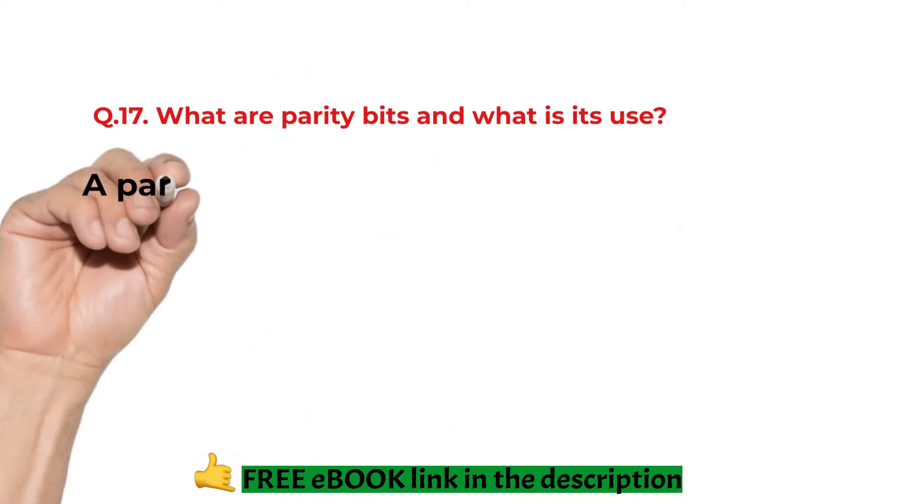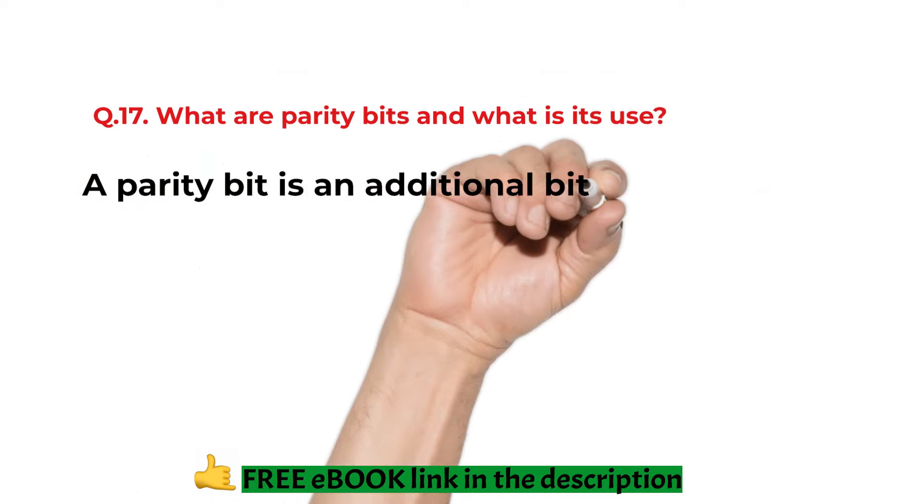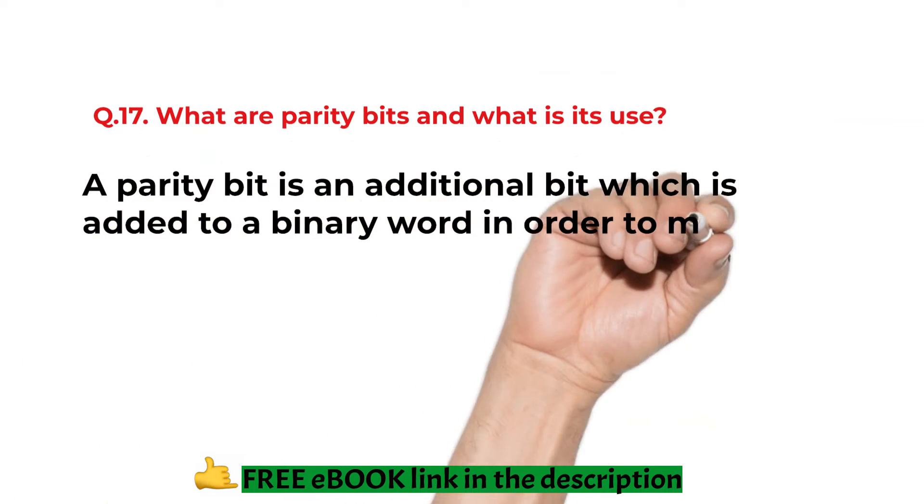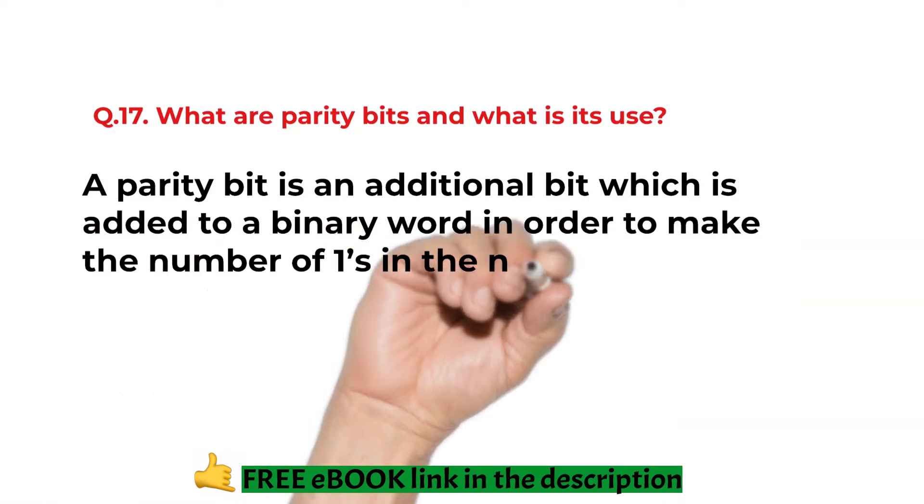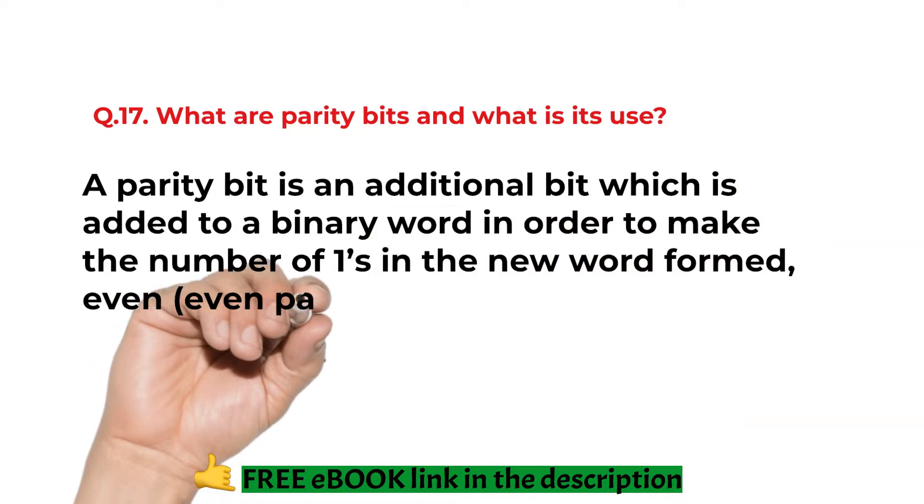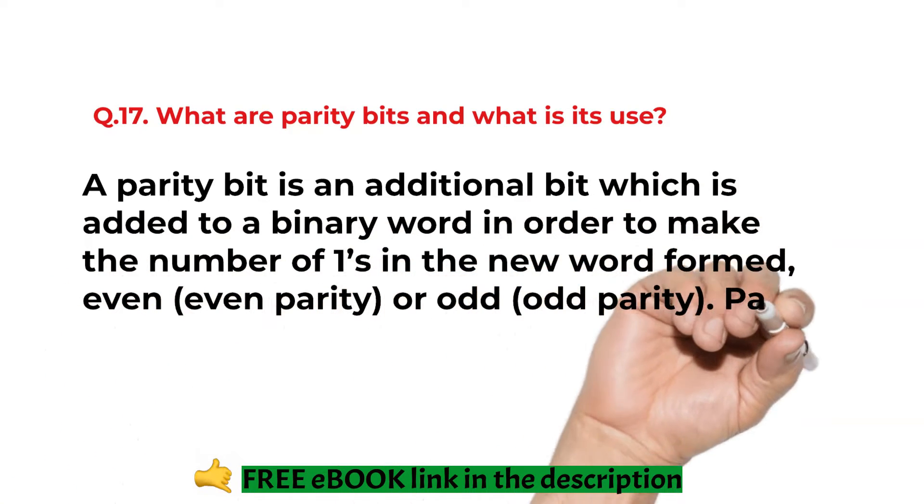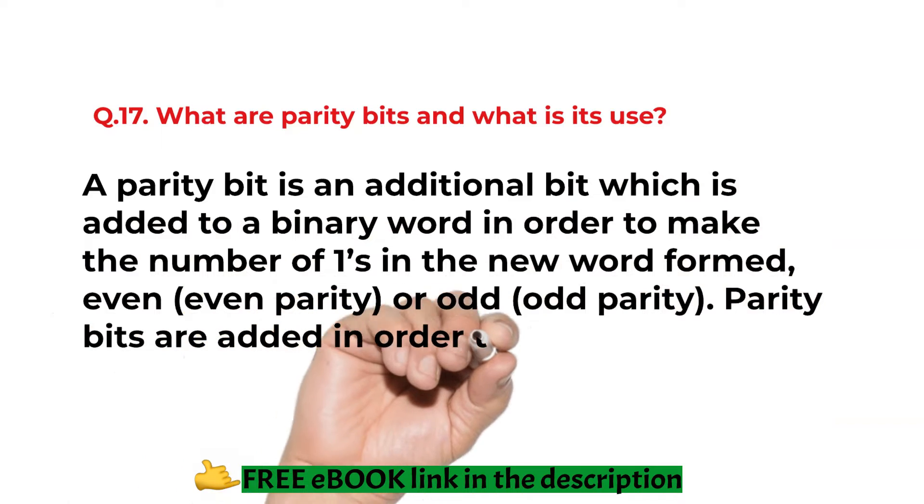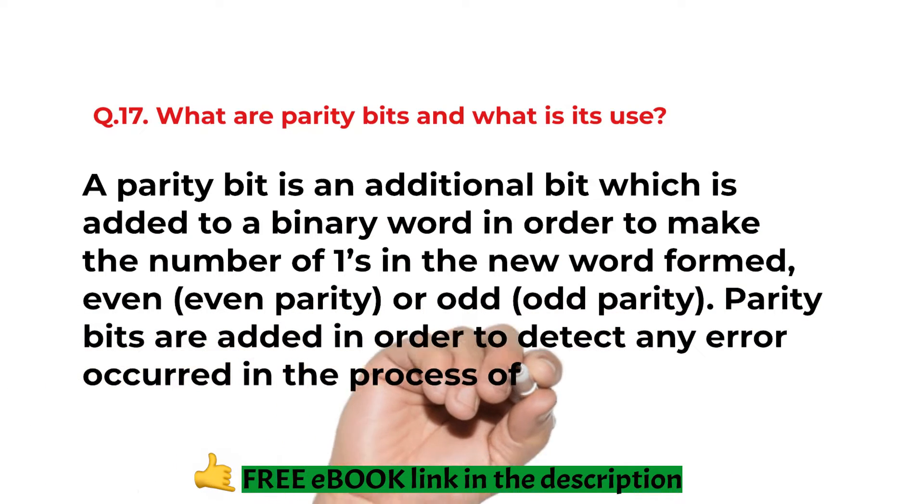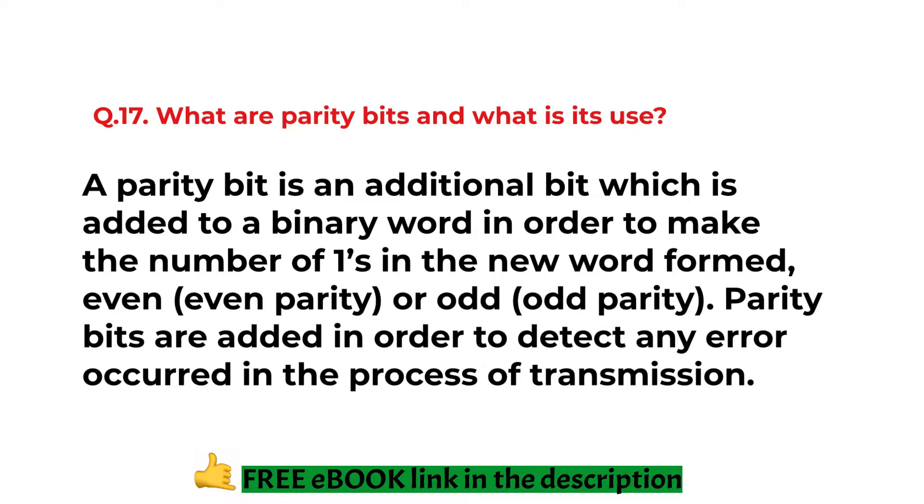What are parity bits and what is its use? The parity bit is an additional bit which is added to a binary word in order to make the number of ones in the new form even parity or the odd parity. Parity bits are added in order to detect any error occurred in the process of transmission.